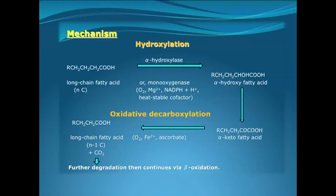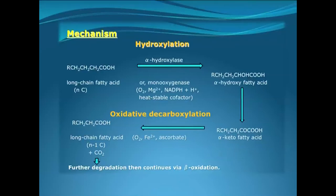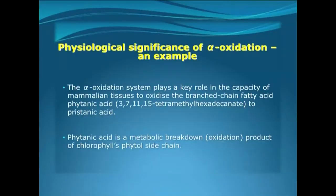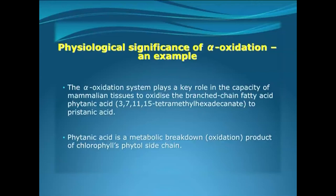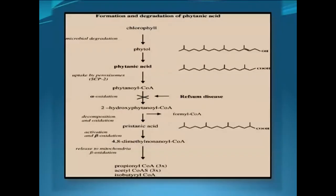This particular fatty acid shortened by one carbon atom enters the mitochondria to continue with the normal beta-oxidation pathway. An important physiological example of alpha oxidation is that it enables mammals to oxidize phytanic acid to pristanic acid. Phytanic acid is a branched-chain fatty acid with the name 3,7,11,15-tetramethylhexadecanoate, and it is the oxidative product of the phytol chain of chlorophyll.